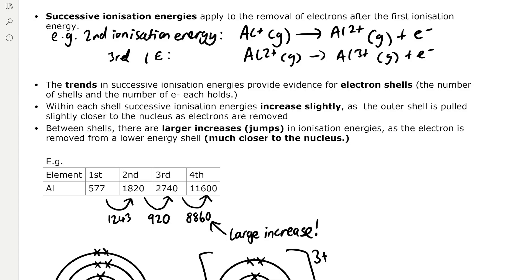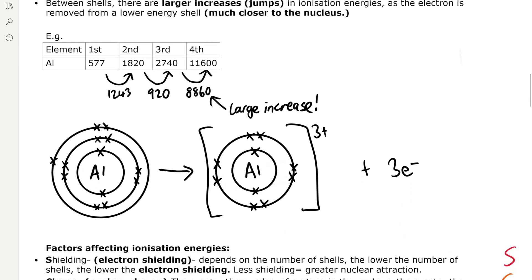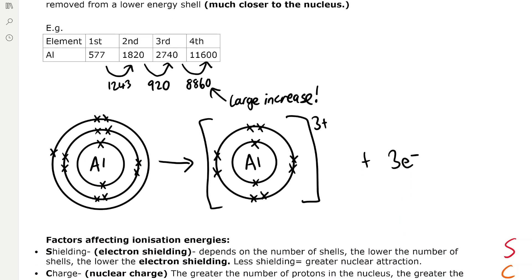For example, looking at the first, second, third, and fourth ionisation energies of aluminium: from the first to the second there is a relatively small jump, from the second to the third another relatively small jump, and then from the third to the fourth a very large jump — as electrons begin to be removed from the lower energy shell. You can see this in the diagram. In the aluminium atom we have three shells; as those three electrons are removed from the outer shell, we then start removing from the second energy level. The fourth ionisation energy requires much larger energy because the electrons are much closer to the nucleus, so there is much greater nuclear attraction.